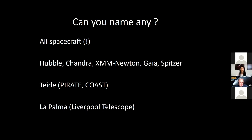The top one on the list is a bit of a trick. If you think of any of the famous spacecraft, they are all in some senses robotic or remote telescopes. With the exception of Hubble, we are not going to fix these things on a regular basis — and even Hubble works independently. The Open University has Pirate and Coast, two robotic telescopes among others, and La Palma has the Liverpool Telescope, which I'll tell you a little more about later.